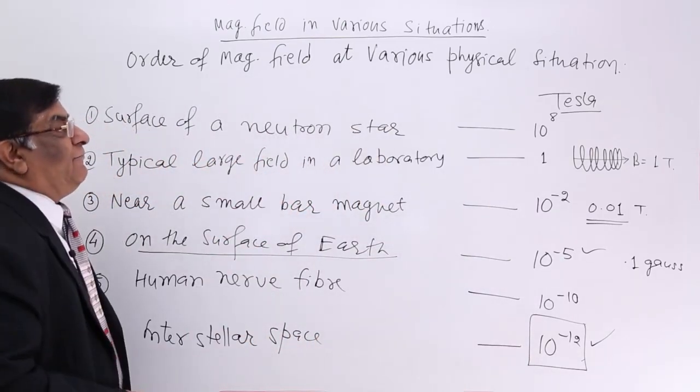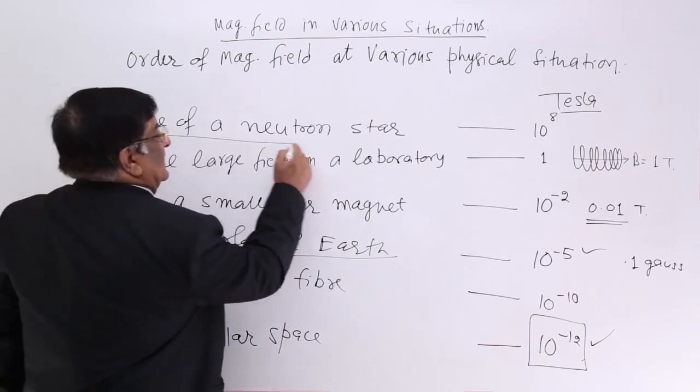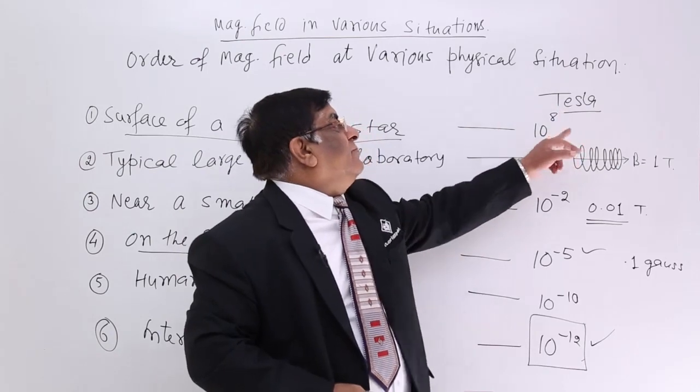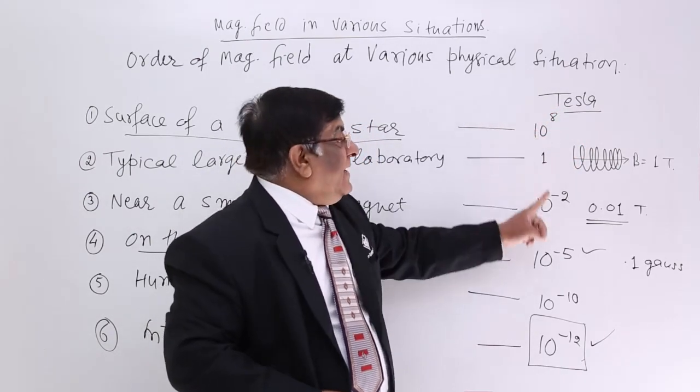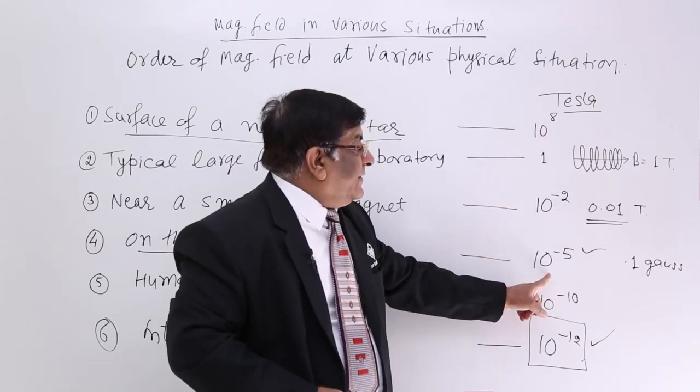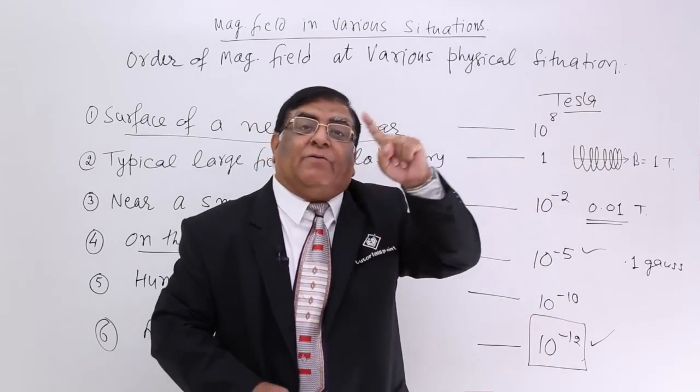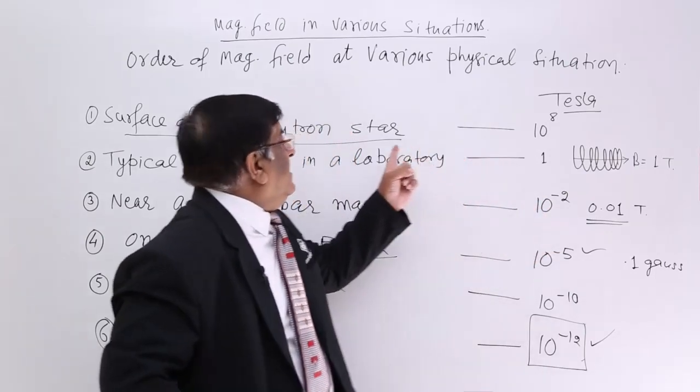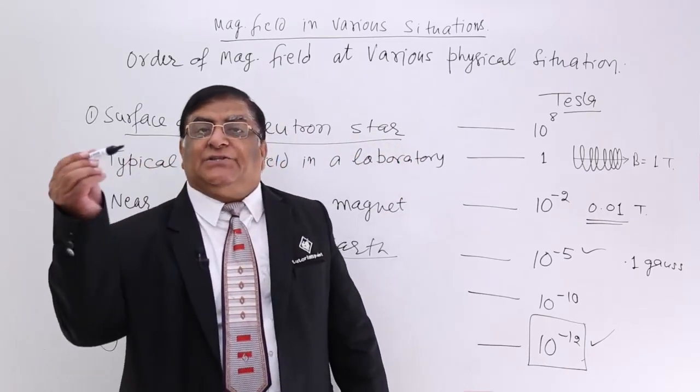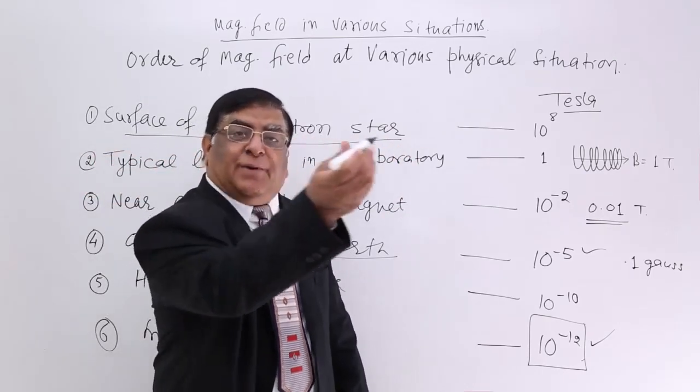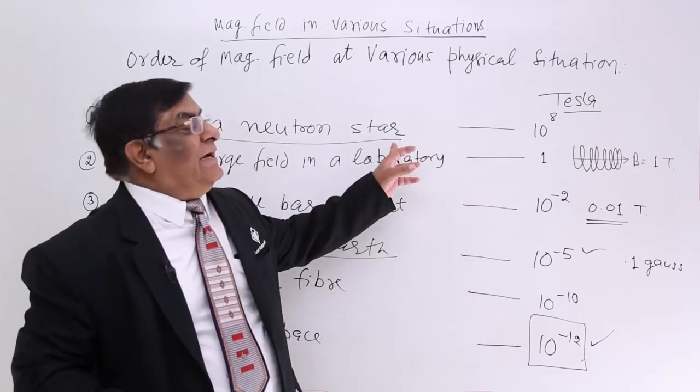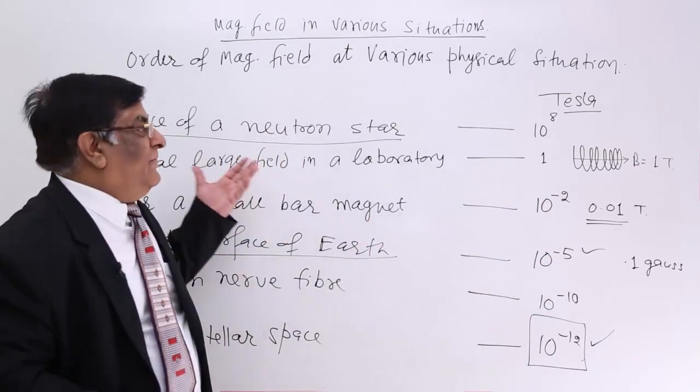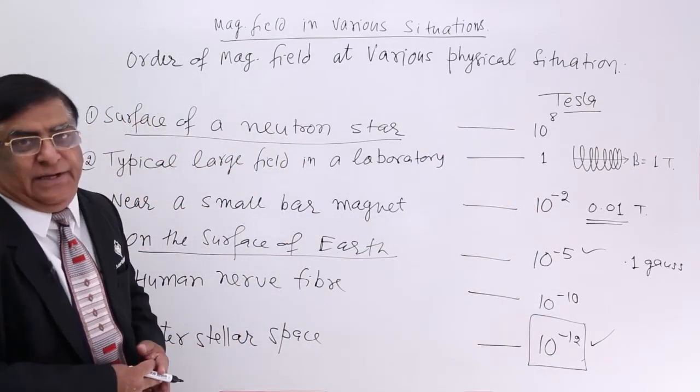So a very strong magnetic field - yes, here. On the surface of a neutron star we find it 10 to the power plus 8. Compared to - how much is it compared to Earth? Minus 5 plus 8, 10 to the power 13 times. So it is such a strong magnetic field in this neutron star. Any charge going cannot escape it, it has to go around it. So magnetic field is so strong. So this is the variation of magnetic field at different locations in our day-to-day life.